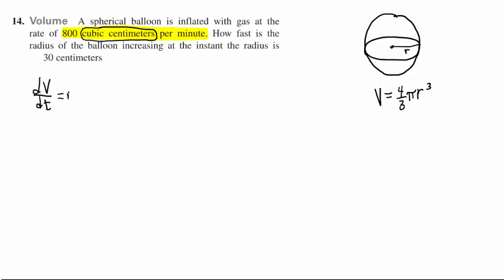So this is the rate of change of the volume with respect to time, and in this case they're telling us that dV/dt is 800 cubic centimeters per minute consistently.